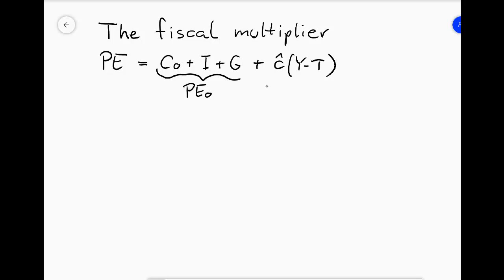The statement is that if you increase one of the autonomous parts of the planned expenditures then you are going to get a K fold change in the aggregate GDP where this K is larger than 1.